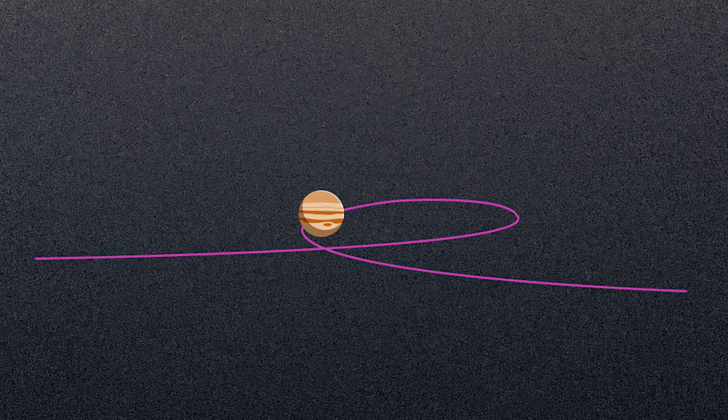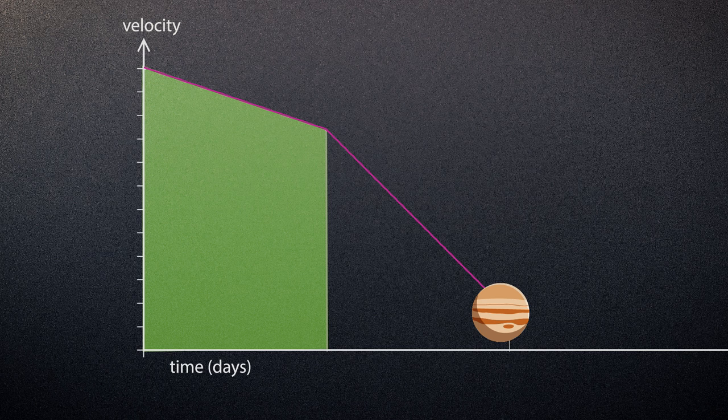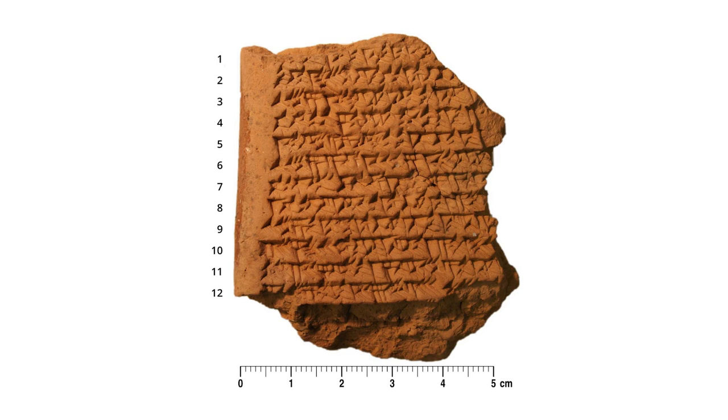To compute Jupiter's position, they focused on its movement along the ecliptic. The ecliptic is the path that the sun appears to trace through the stars. The Babylonians charted Jupiter's daily motion against time. The chart produces a trapezoid, with the area of the trapezoid showing how far along the ecliptic Jupiter had traveled in a given amount of time.